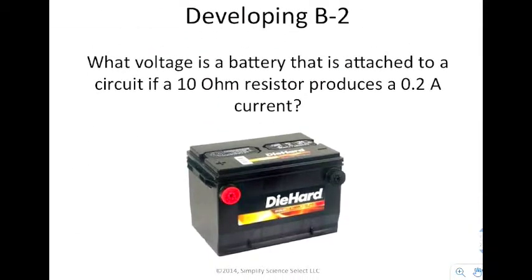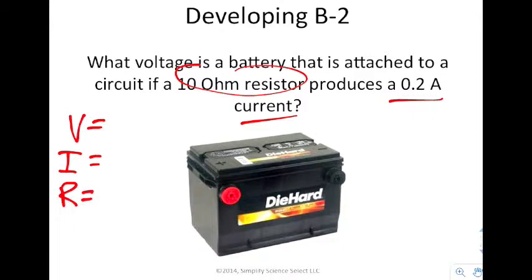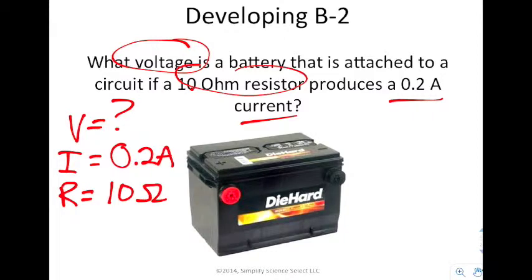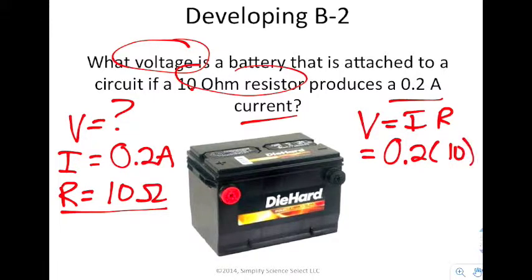Now, it says what voltage is a battery that is attached to a circuit if a 10 ohm resistor produces 0.2 amps of current? Now, whenever we're working with a formula, remember we would like to use the guess method. Where we take all our variables and we say, okay, what is the voltage? Question mark. 10 ohm resistor, R. 0.2 amps of current, A. Here I've done my given information and my unknown. And now I write my equation. V equals IR. And I say, okay, V equals 0.2 times 10. Multiply those two together and you get two volts.